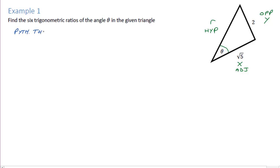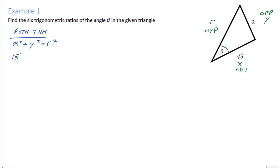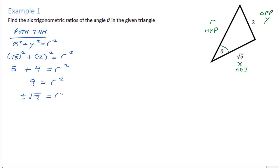Pythagorean theorem says x² + y² = r², or adjacent² + opposite² = hypotenuse². So: (√5)² + 2² = r². √5 squared is 5, and 2 squared is 4, giving us 9 = r². Taking the square root — we ignore the negative since we're talking about a length — so r equals the positive square root of 9, which is 3. I'll go label that on our diagram.